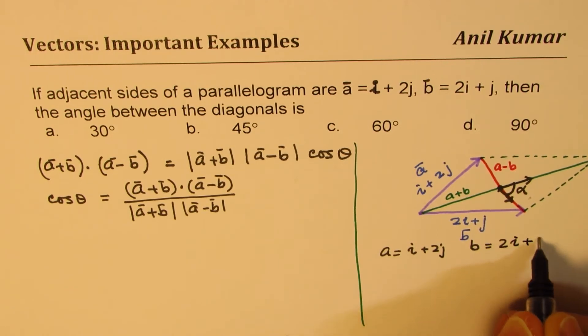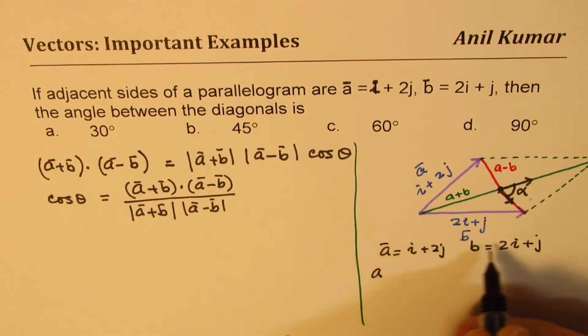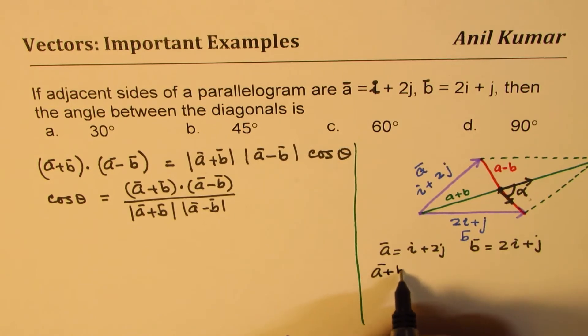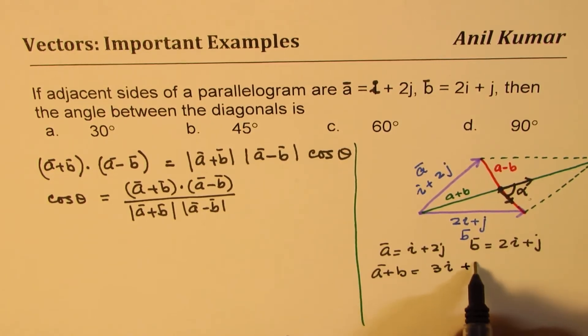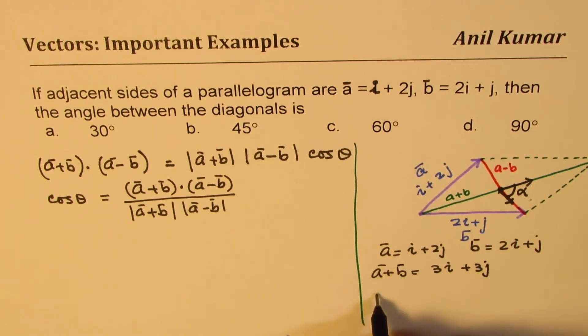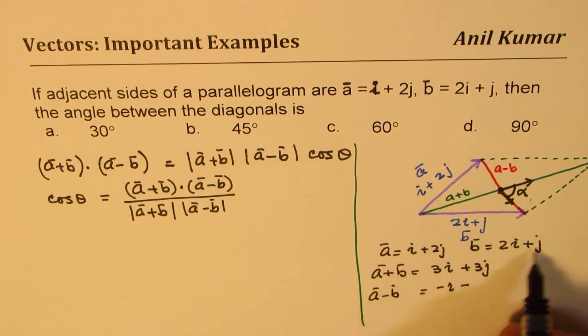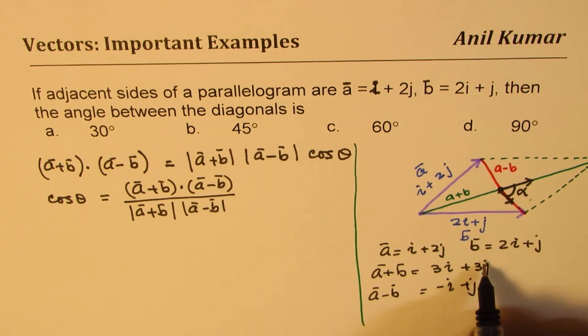So vector a + b will be equal to 3i + 3j, and vector a - b is going to be -i + j. So these are the vectors now, so we could use the dot product here.